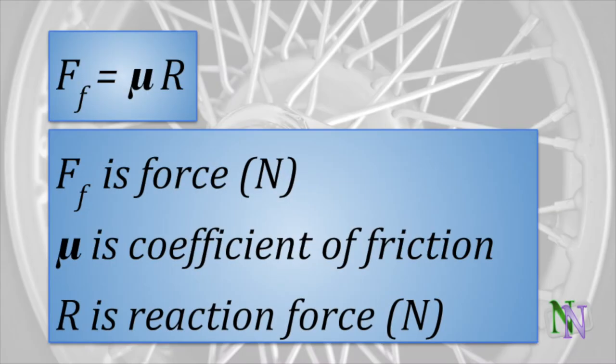The frictional force is measured in Newtons and depends on two factors: the reaction force R between the surfaces in Newtons, and the coefficient of friction mu which tells us how much friction there is between the two surfaces. Mu is calculated as the ratio of two forces so it does not have a unit.